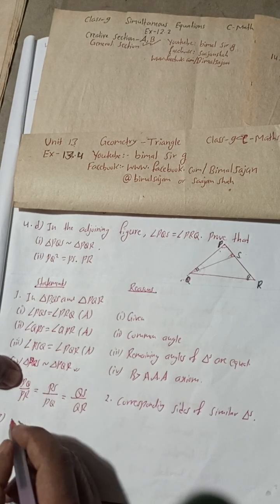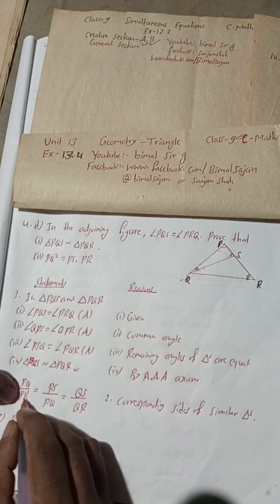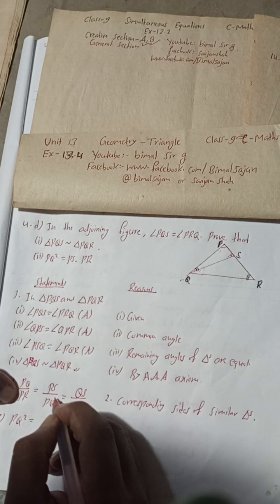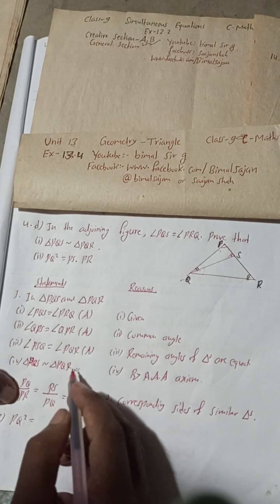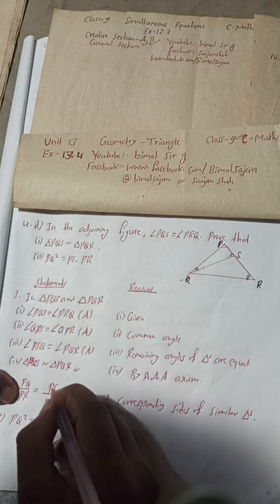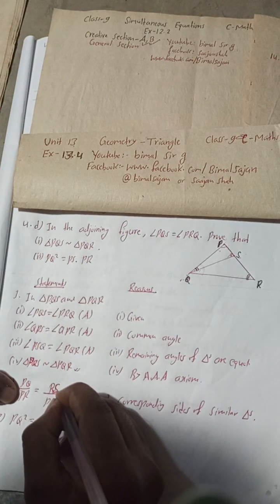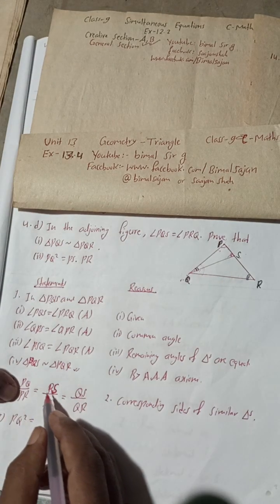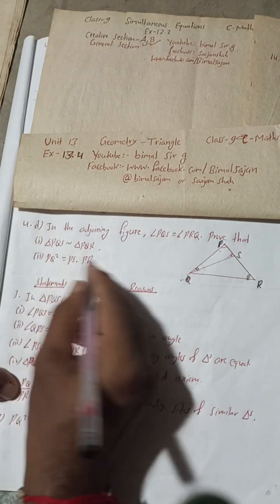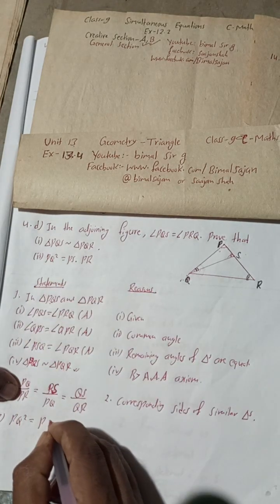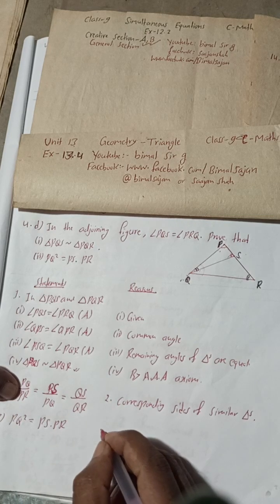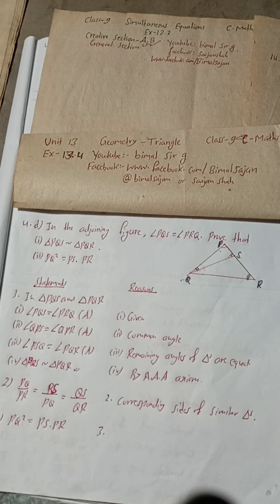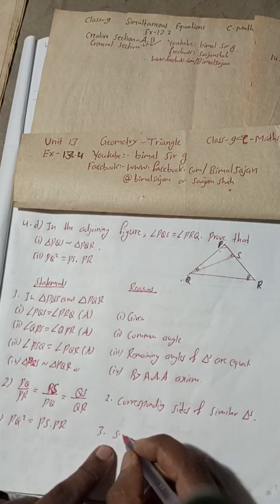Now from this, what we get here? Now if we take this, first and the second ratio, what we get? PQ into PQ, PQ square, and PR, this multiply PR into what? This is PS. Yes, this is PS. Write it clearly. So this is PS. Now when you cross multiply this is what? PR into PS, so PS into PR.